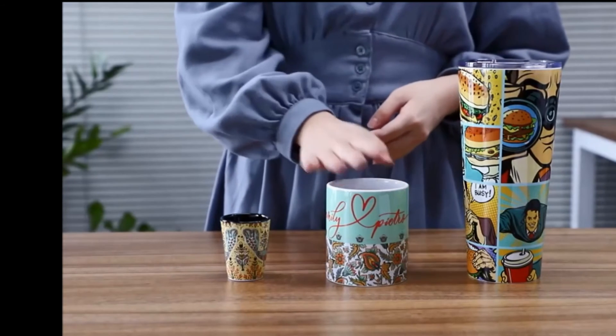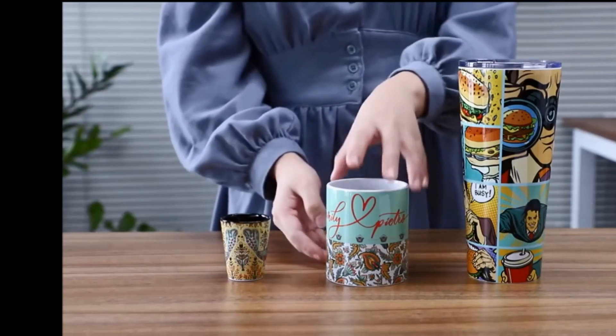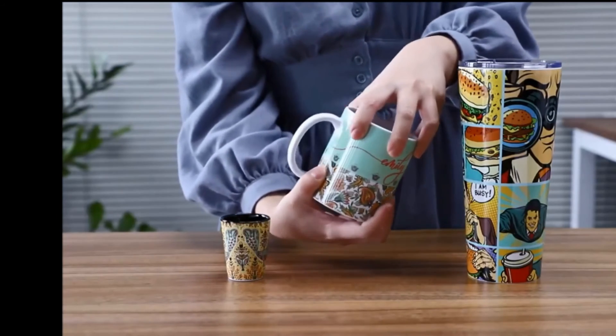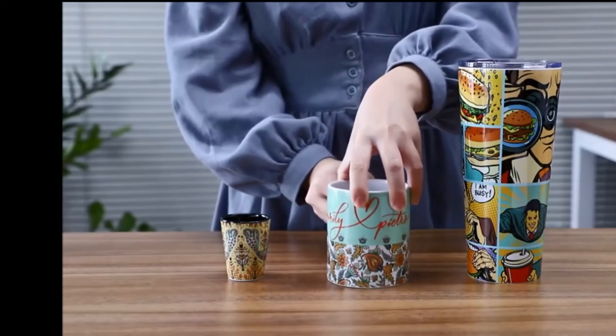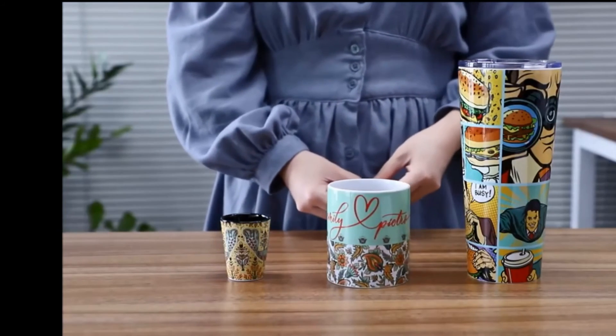Now the tumbler, the mug and the short glass are done. The full bleed printout qualities are so amazing. They look so nice and the colors are printed so well.